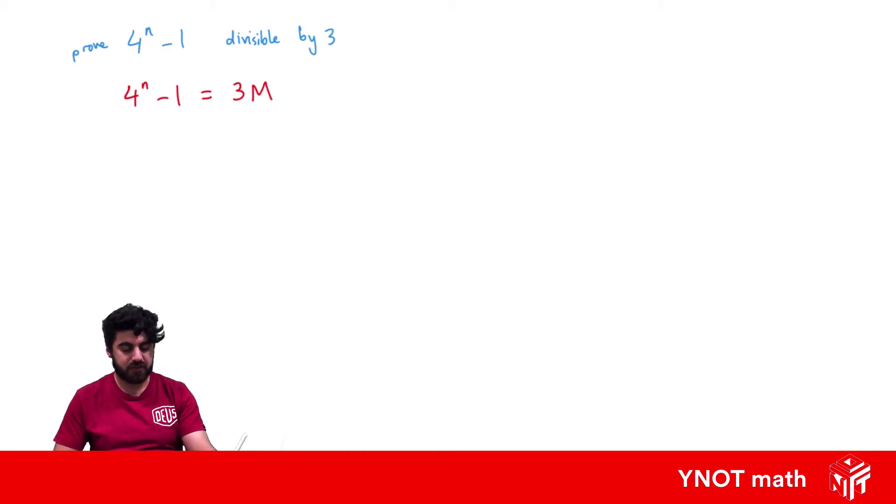Because if you imagine dividing both sides by 3, this divided by 3 equaled an integer, it would show that it's actually divisible. So this is the statement we need to prove where M is an integer.